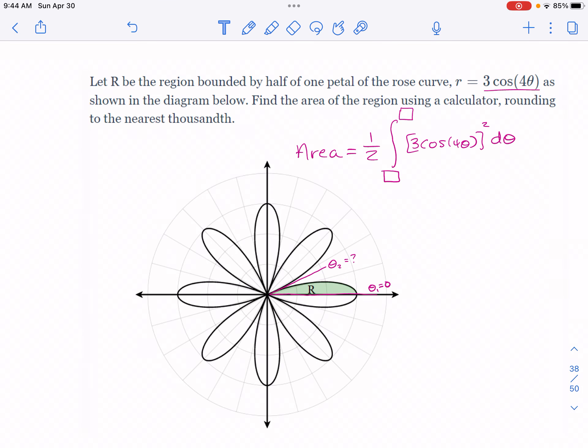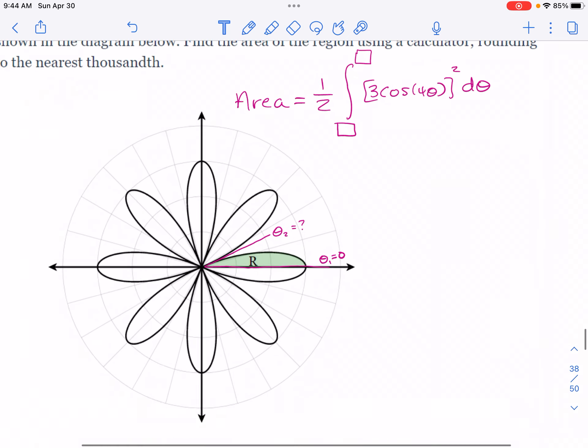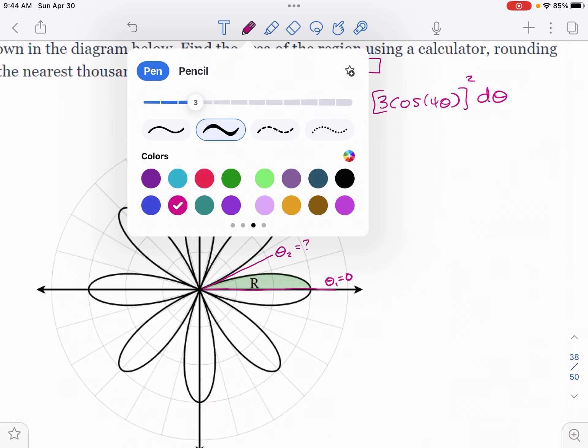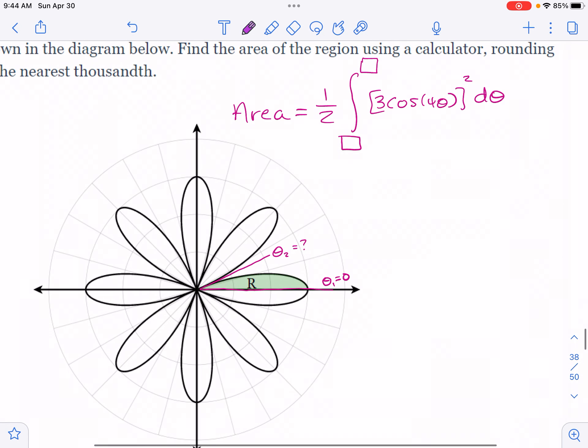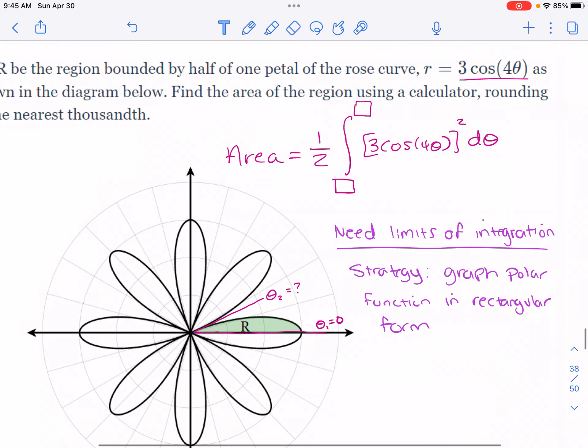The strategy for doing this—and this is kind of the main takeaway—the strategy is we're not going to be in polar ever. Don't ever be in polar if you're taking the BC calc exam; it does not have any functionality that we need. So the strategy is we need limits of integration, and the strategy is going to be to graph this function in polar—I mean in Cartesian. Graph the polar function in rectangular form. This is a sinusoid and it's going to make a nice wave function that we'll analyze.